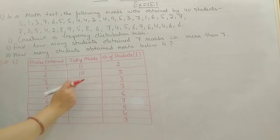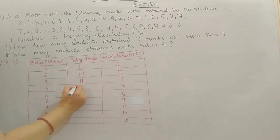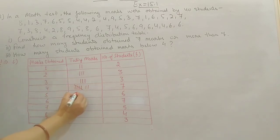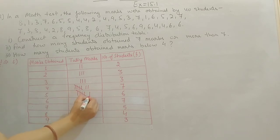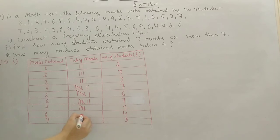Now draw tally marks for each frequency. 3 means 3 lines. For 7 — 1, 2, 3, 4, 5, 6, 7. For 6 — 1, 2, 3, 4, 5, 6. For 5 — 4 standing lines and 1 cross line. For another 5 — same. For 4 — 1, 2, 3, 4. For 3 — 1, 2, 3.